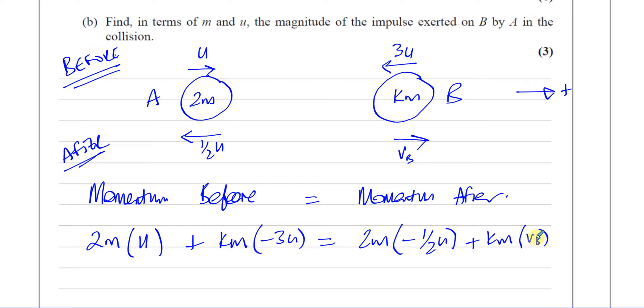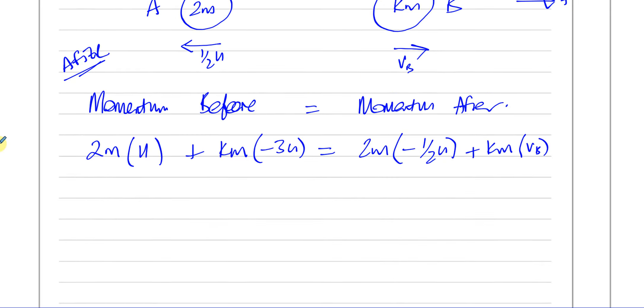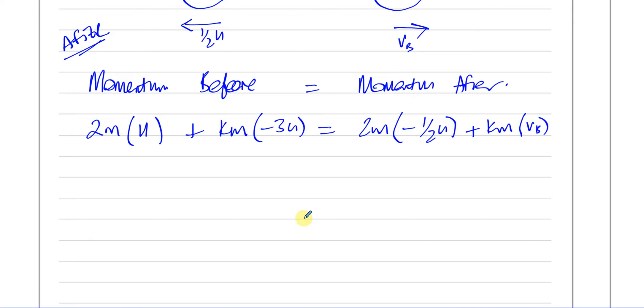And we know that this is KM times VB. Now we know for sure that VB is going to be a positive value. We know that from the fact that we've called that positive and it's going to go in that direction. So let's have a look what we've got here. First of all, I can get rid of the M's because there's M in every single term.